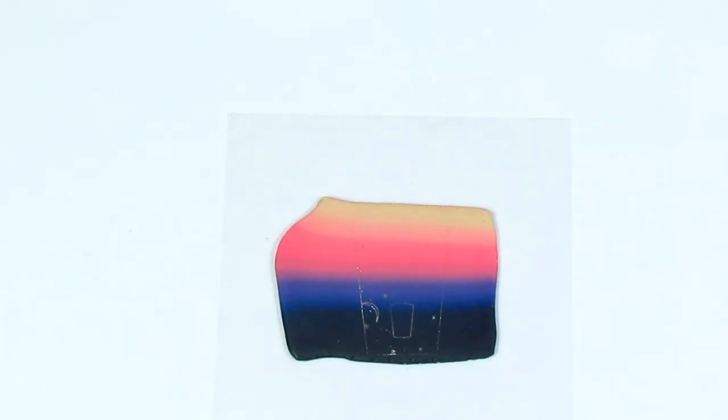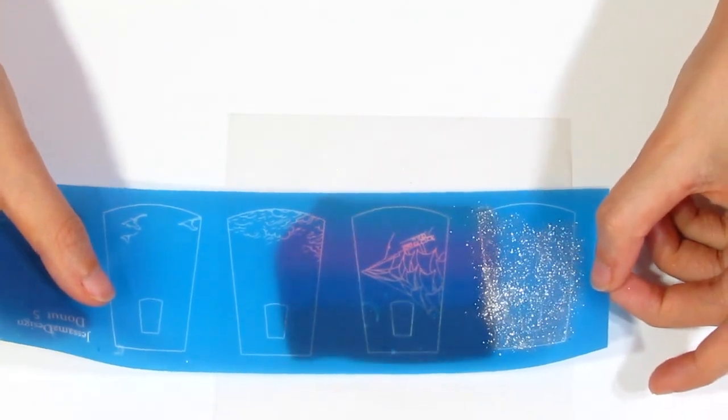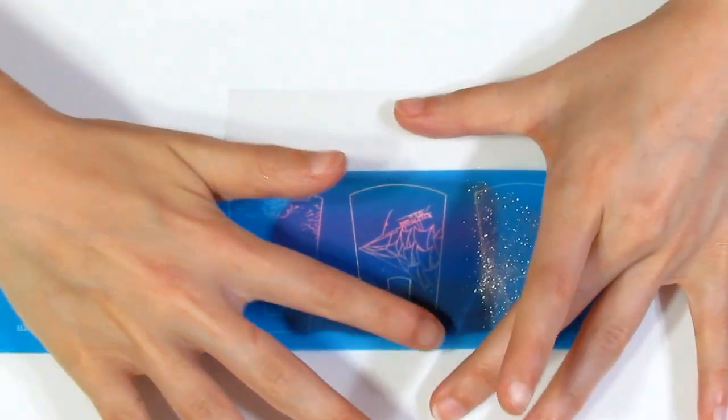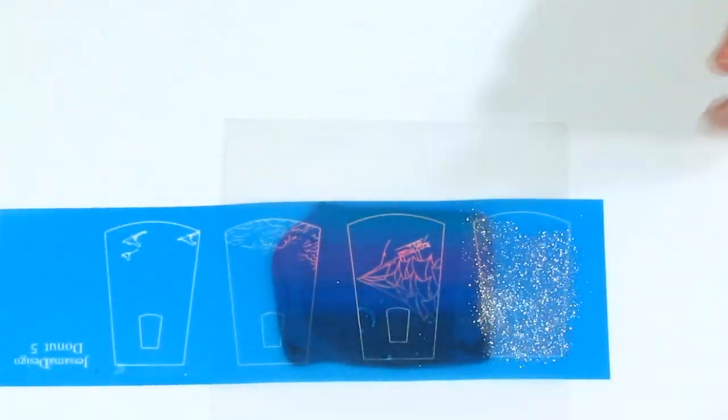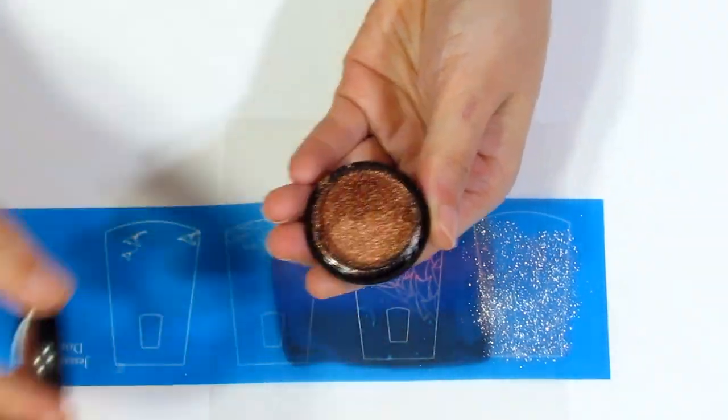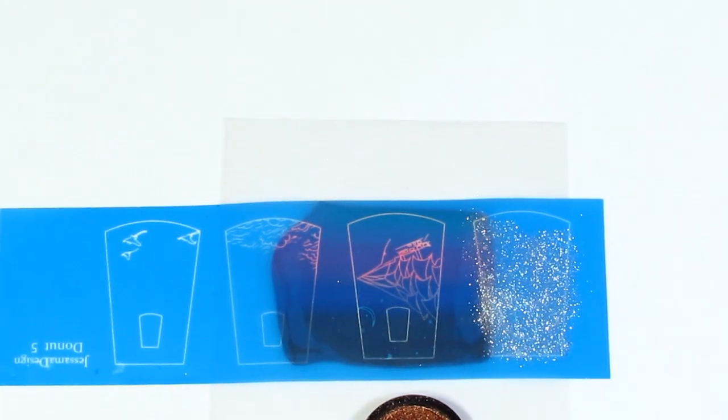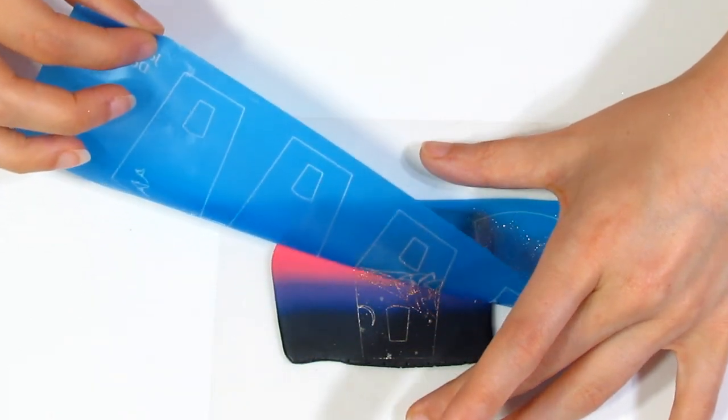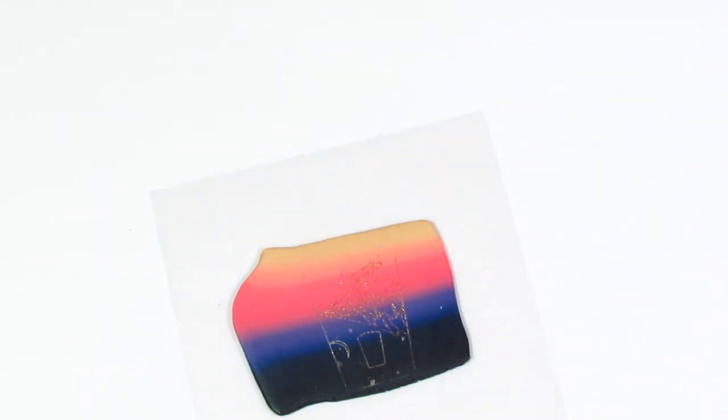Then we will move on to the next one which is the boat and just line that up with the previous one like so. Burnish it down and move on to the next color which is this antique copper color. Color that in like before and that will have taken care of the boat. Then you're going to lift that up and again burnish it in.